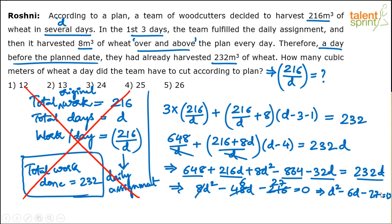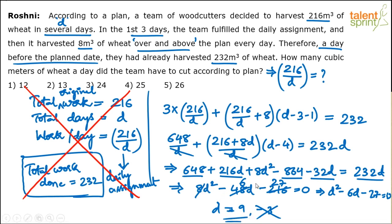So d = 9 days. The actual question asks for 216/d — the cubic meters per day according to the plan. So 216 ÷ 9 = 24. The final answer is 24 cubic meters per day, which is option 3. You can cut down the time by reducing the number of steps on paper; it's all about your understanding of the equations.